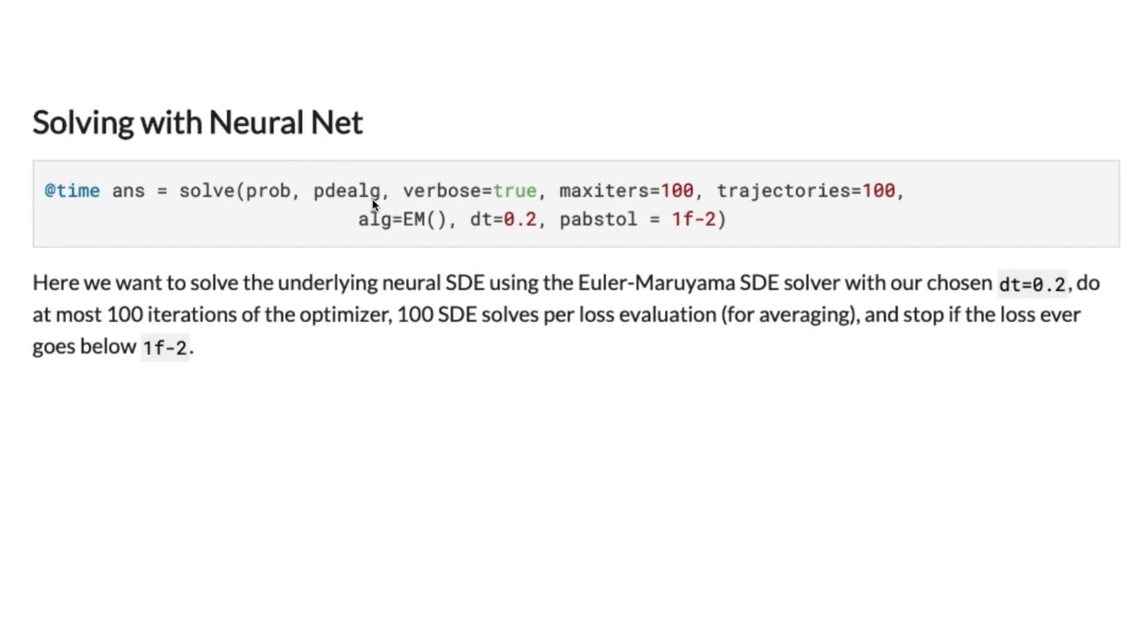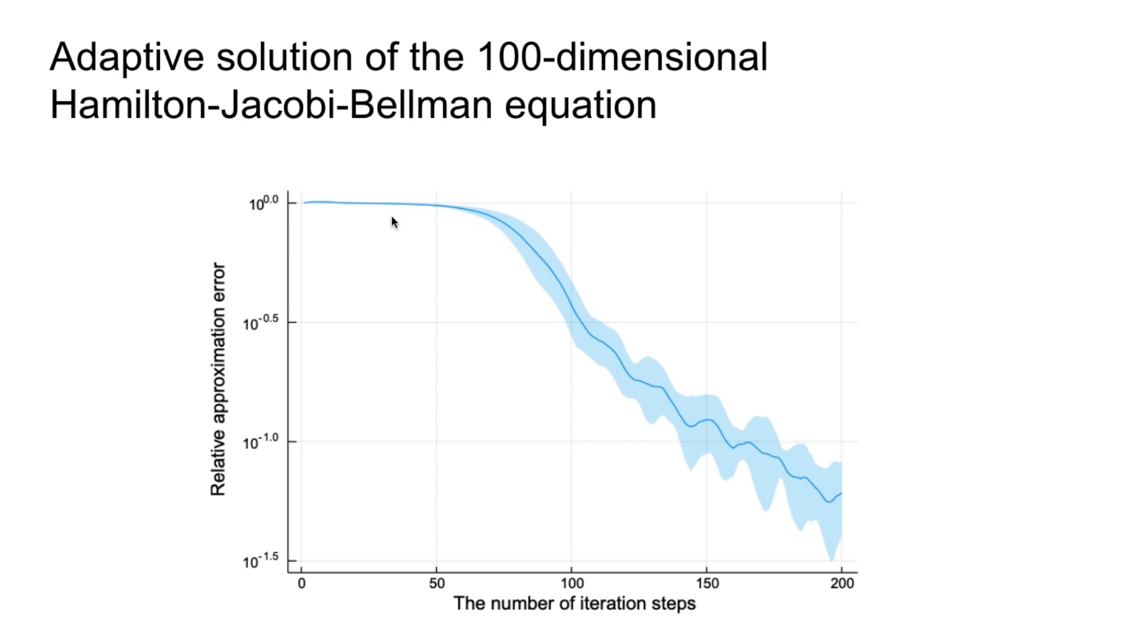One of the parameters of the solver is the algorithm for solving stochastic differential equations. In this case, we're using the Euler-Maruyama SDE solver with discretization of 0.1. The training process will look something like this.